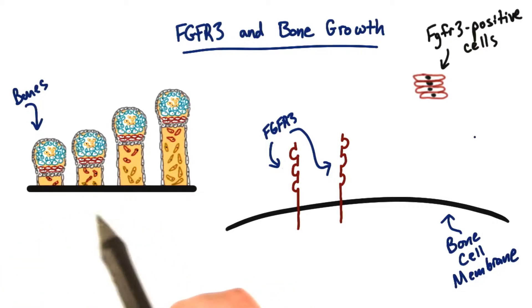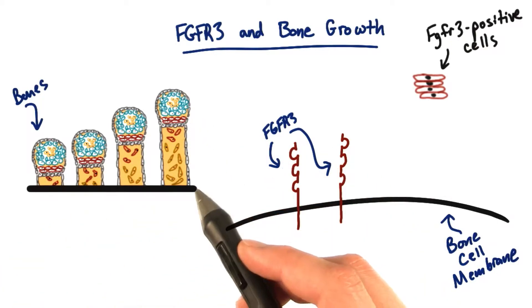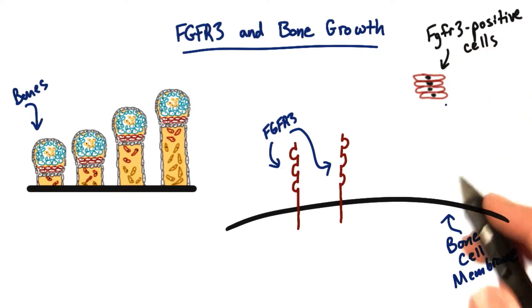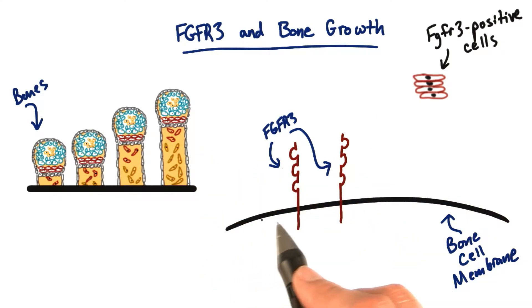As bones grow, the cells growing inside the bone are FGFR3 positive cells. If we zoomed in really close, these cells in red - if we looked very close up - here's the cell membrane.